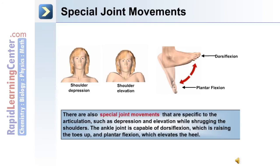There are also special joint movements that are specific to the articulation, such as depression and elevation while shrugging your shoulders. The ankle joint is capable of dorsiflexion, which is raising the toes up, and plantarflexion, which elevates the heel.